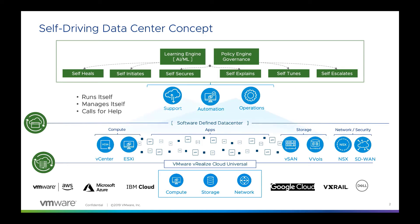VMware vRealize AI cloud is a self-learning engine that uses AI and ML to do self-healing, self-initiation, self-securing, self-explaining, and self-escalating. But for the first instantiation and the initial availability, we're going to be rolling out with a self-tuning and optimization engine for your storage and vSAN clusters using vRealize Operations Cloud.